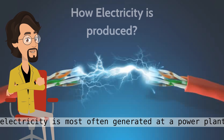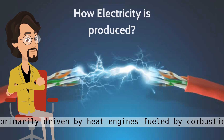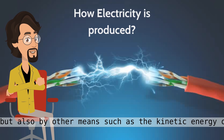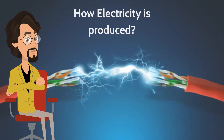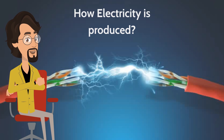Electricity is most often generated at a power plant by electromechanical generators, primarily driven by heat engines fueled by combustion or nuclear fission, but also by other means such as the kinetic energy of flowing water and wind. Other energy sources include solar photovoltaics and geothermal power.